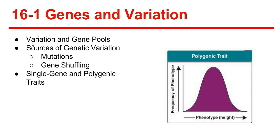Genes and variation. Darwin never knew how heredity worked, because Mendel's work with heredity was not recognized until the 1930s. Genes have at least two forms, called alleles, and organisms are heterozygous for many genes, meaning they have one of one type of allele and another type.